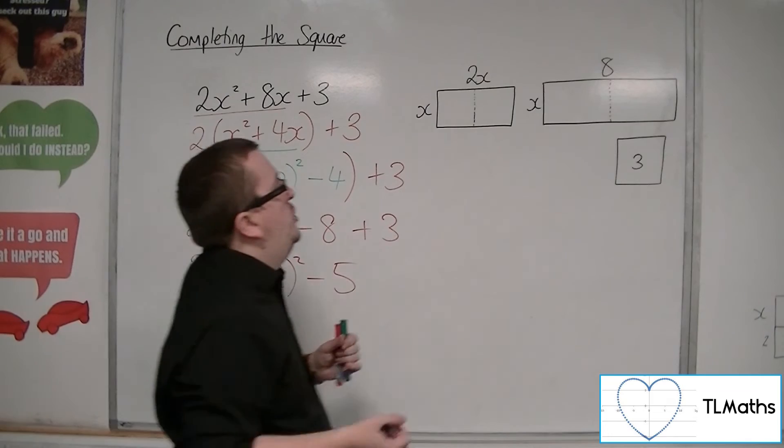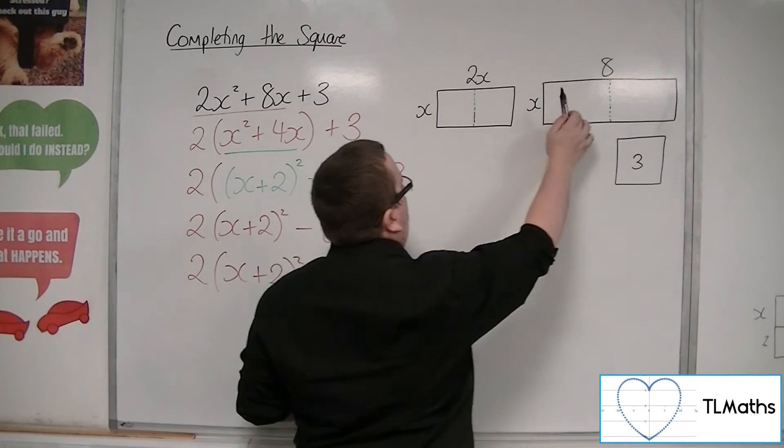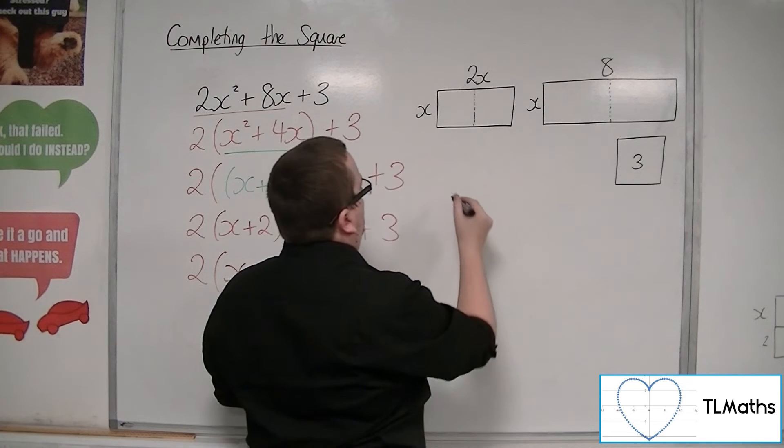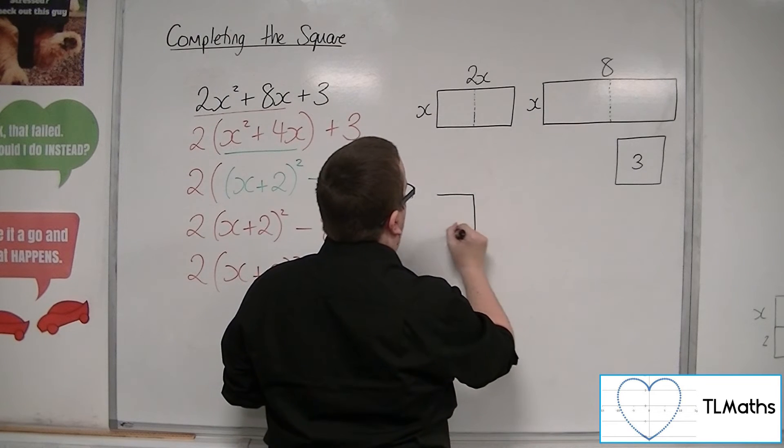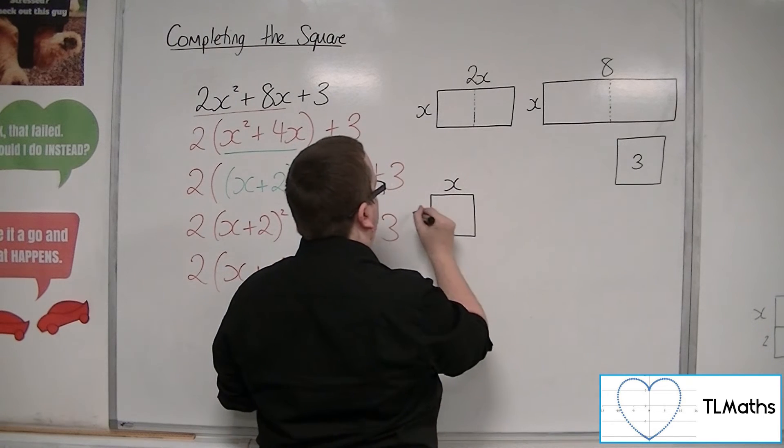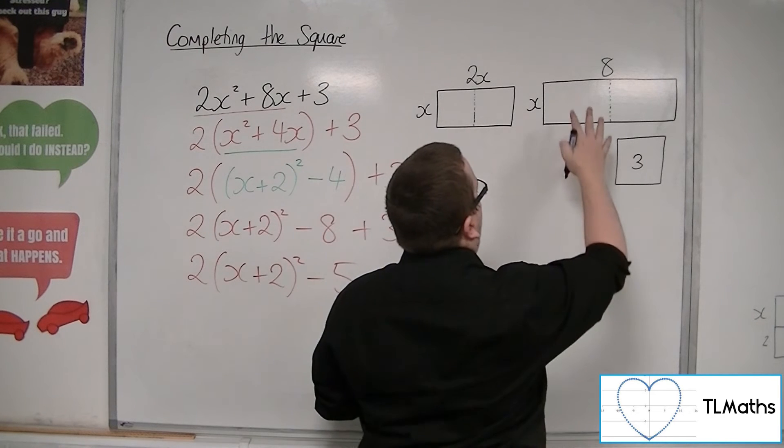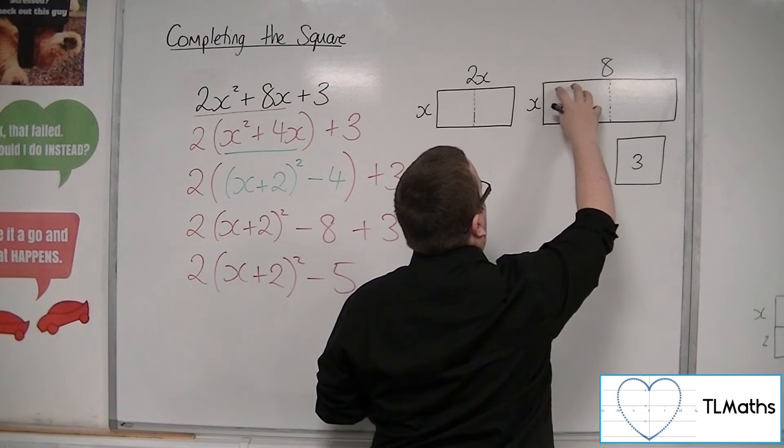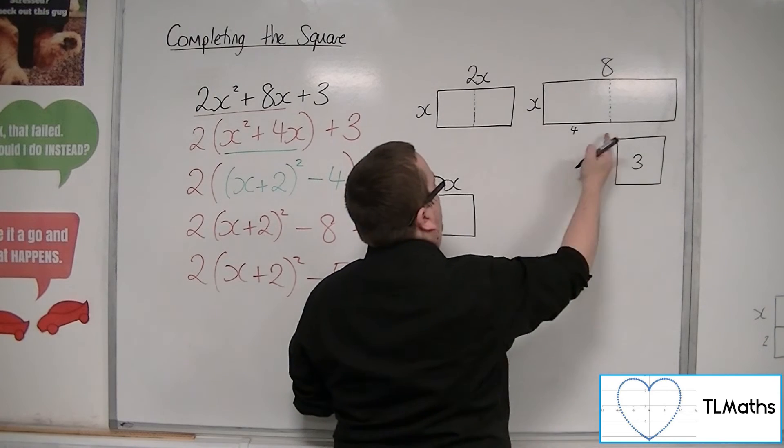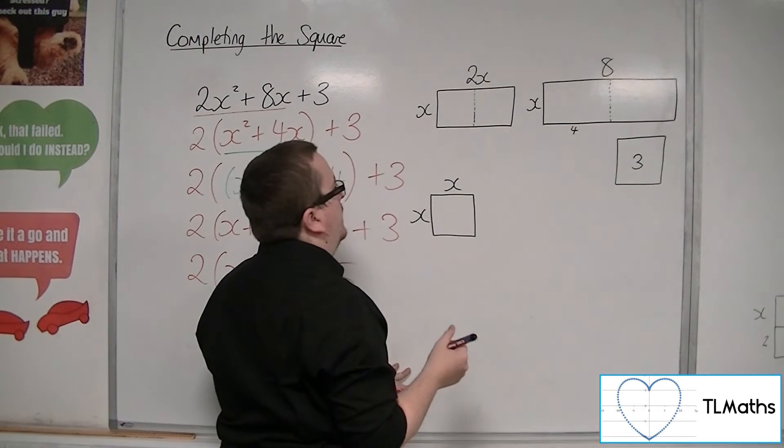So that I'm just focusing on this piece and this piece. So I've got now an x by x, and I've got this single piece here, which is length 4 and width x.